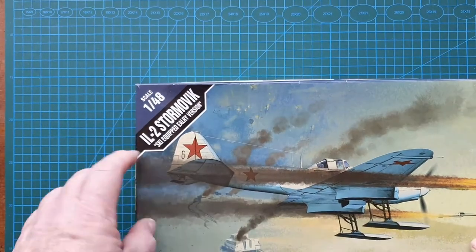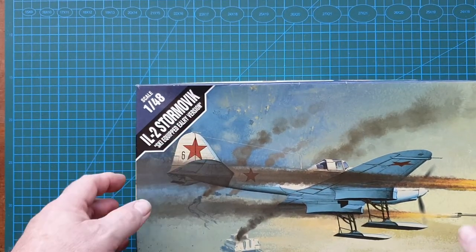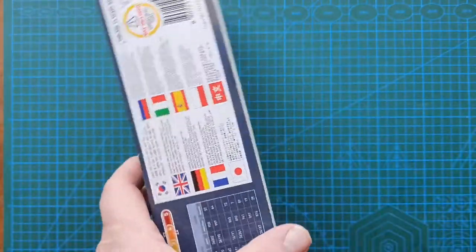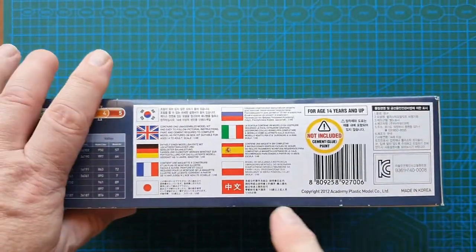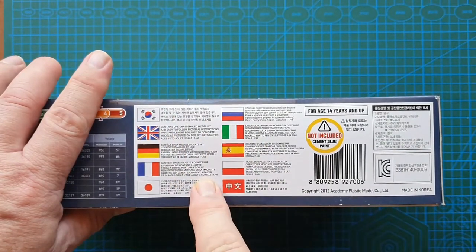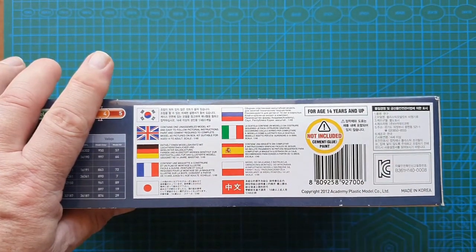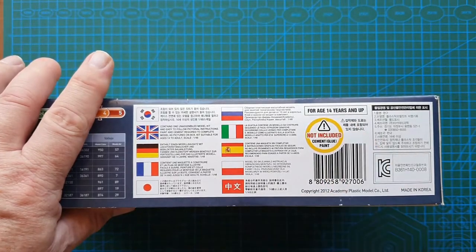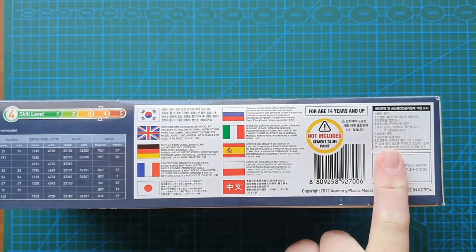On the other side we've got your typical warnings in 10 different languages—cement and glue not included, 14 years and up.